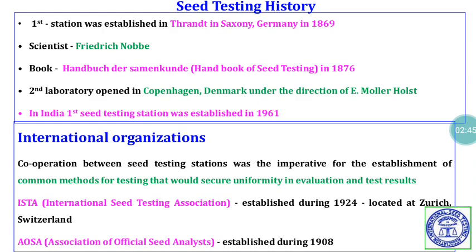As far as the history of seed testing is concerned, the first seed testing station was established in Saxony, Germany in 1869, under the leadership of Frederick Nobbe. Frederick Nobbe is a well-known person in the field of seed testing, popularly called the father of seed testing. He wrote a book titled 'Handbook of Seed Testing' in German in the year 1876.